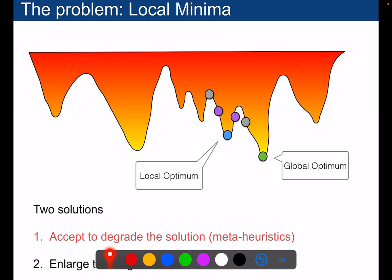The problem of local search is that you can quickly be trapped into some local minima. So assume that you want to minimize some objective function, so you want to go as much as possible down, and you are presently at this solution.